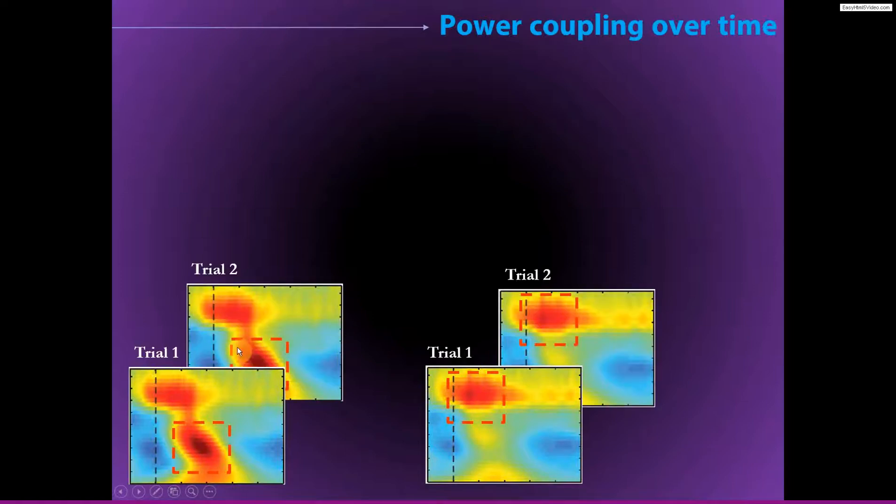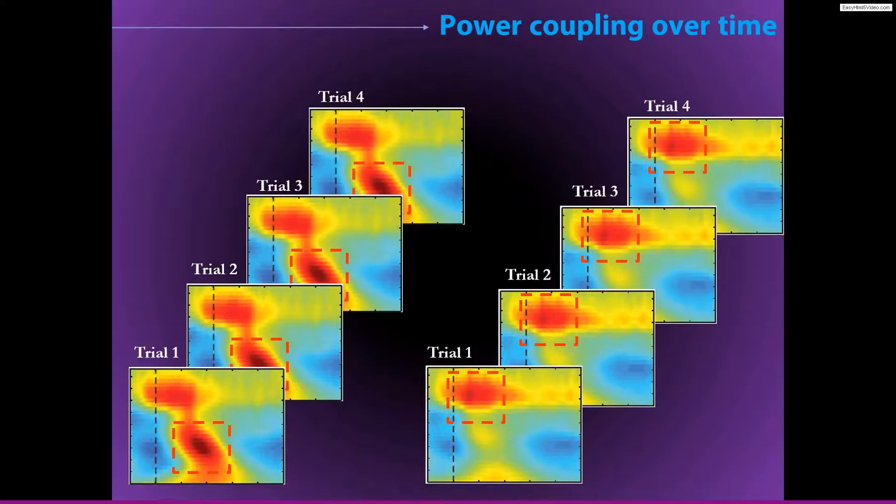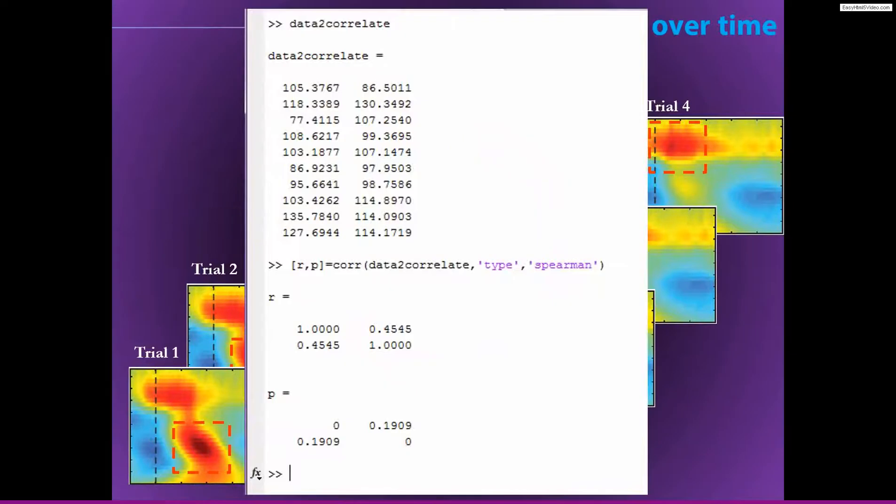Now we go to trial two, and remarkably enough, the time-frequency plots from trial two look really similar to those of trial one. And then you extract the data from the same time-frequency window, here and here, and so on and so forth, all the way through however many trials you have in your data.